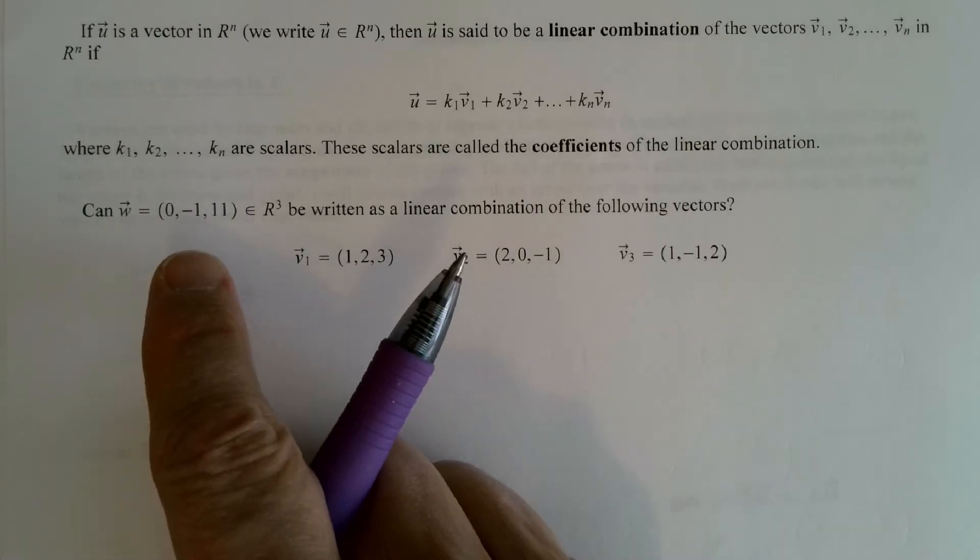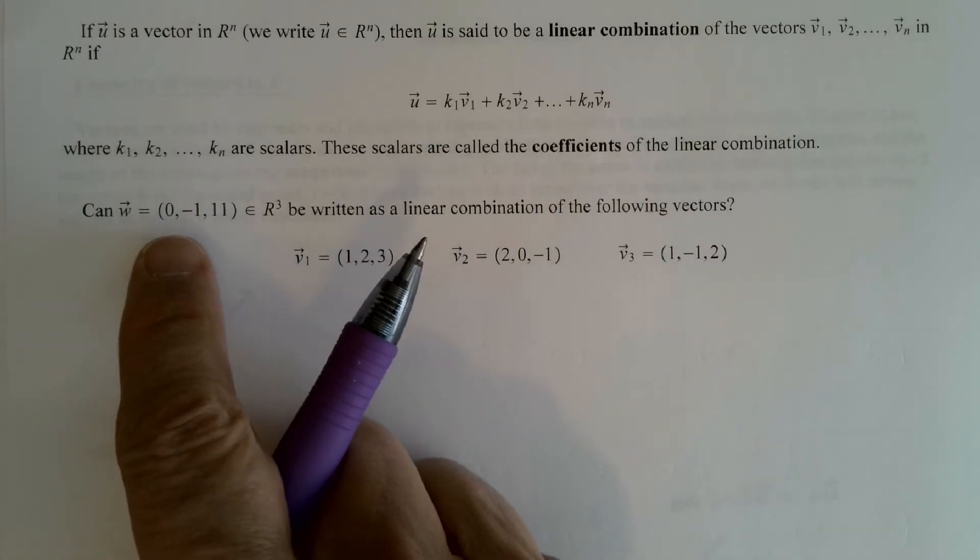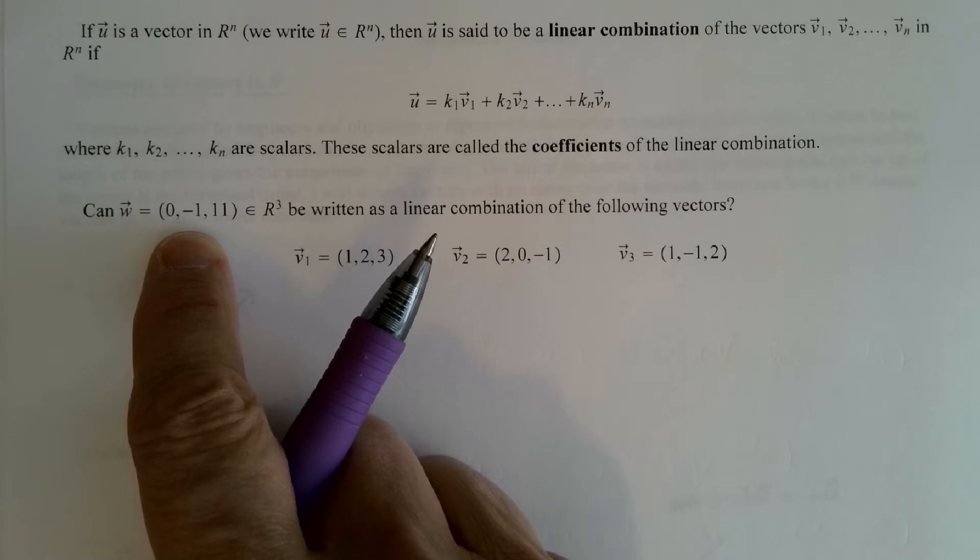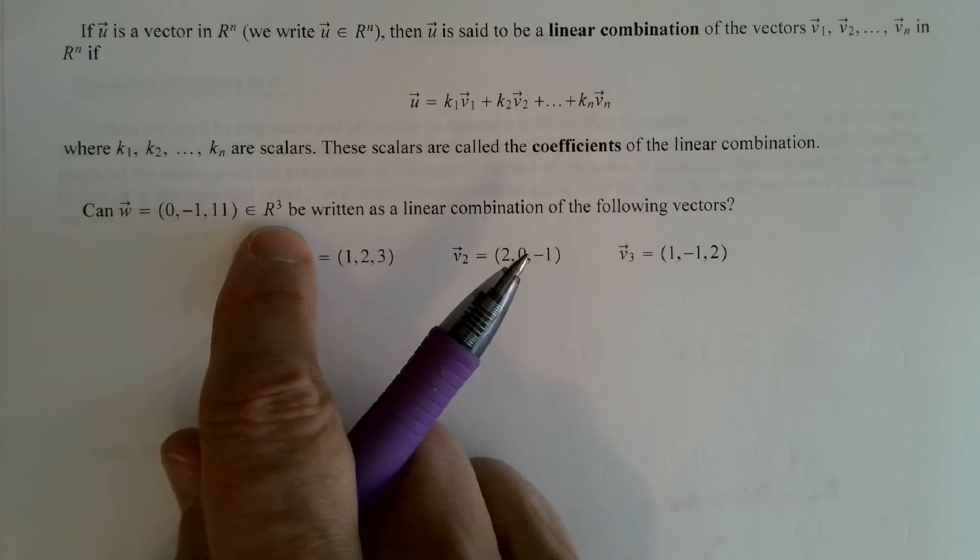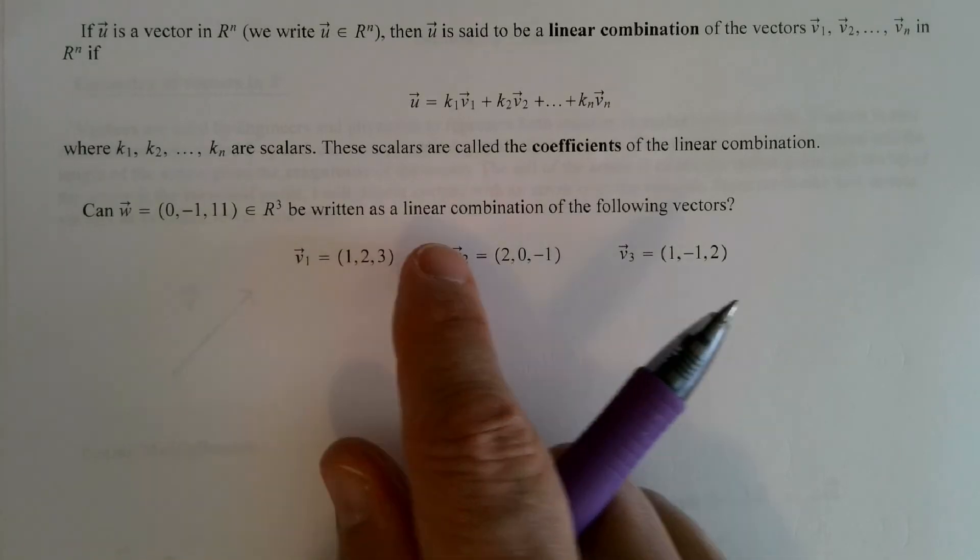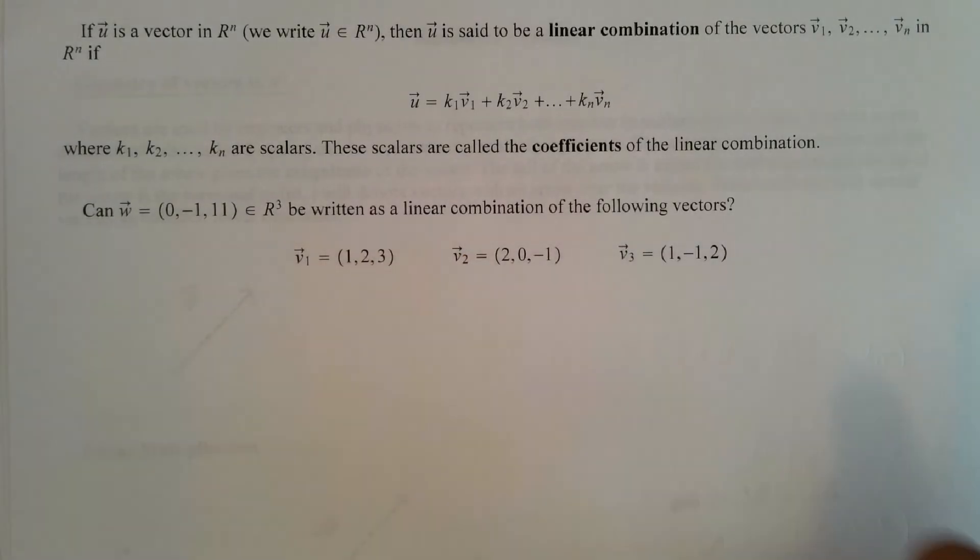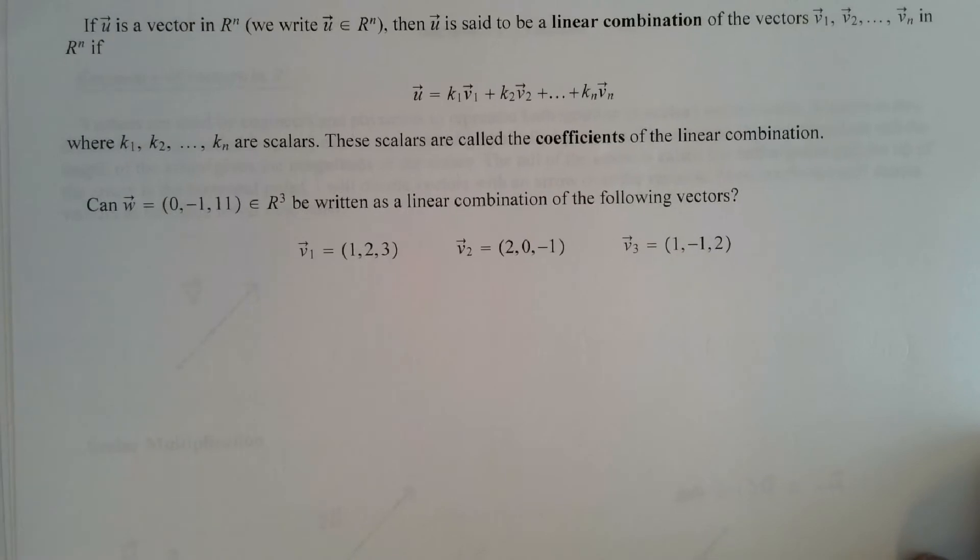And so let's take a look at this problem. Can the vector w, which is an ordered triple, so it resides in three space, can it be written as a linear combination of the following three vectors?